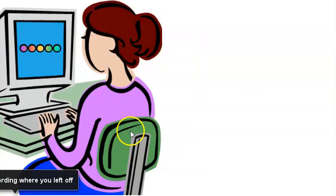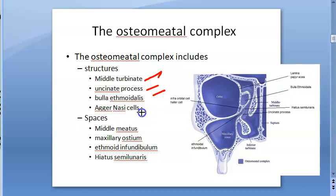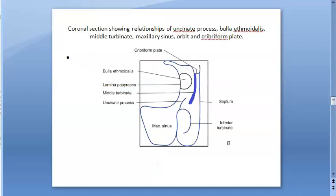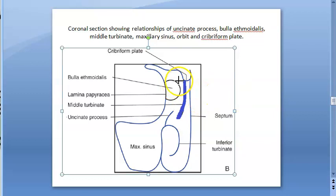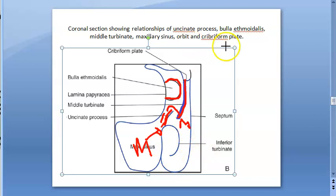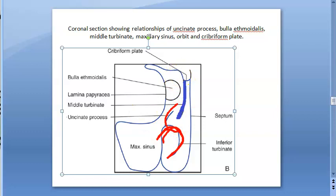Now for the exam, it is good to practice drawing a diagram of the osteomeatal complex. Draw a line for the middle turbinate, then draw the uncinate process on its lateral side, then a circle for the bulla ethmoidalis, and mark the spaces: middle meatus, hiatus semilunaris, ethmoidal infundibulum, and maxillary ostium. Also show the inferior turbinate. The outer structure is the lamina papyracea, and you have the cribriform plate and the nasal septum.